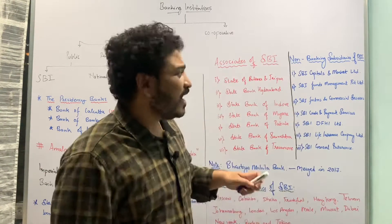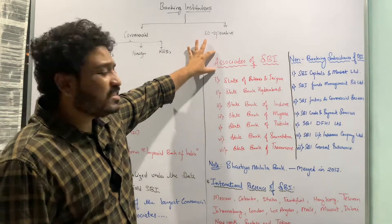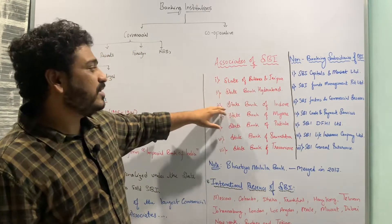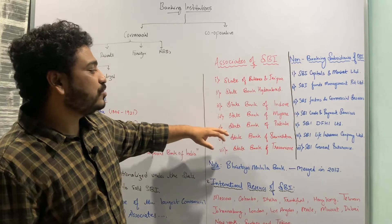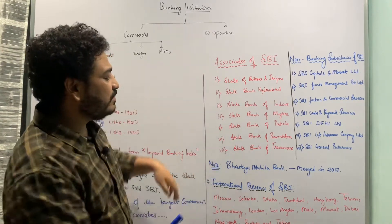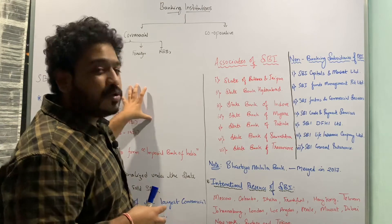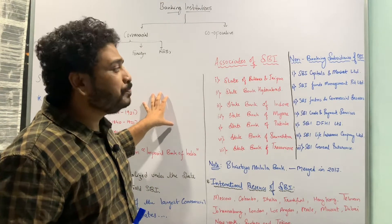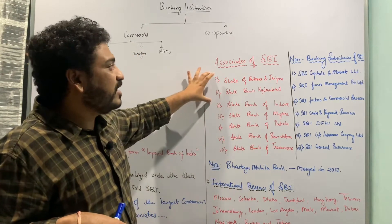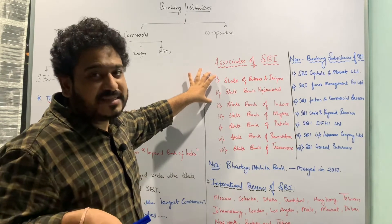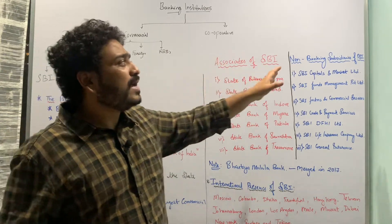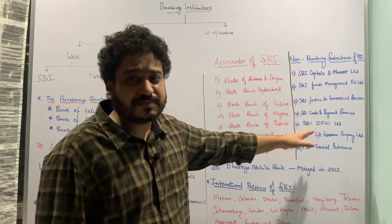The associate banks of the State Bank of India are: the State Bank of Bikaner and Jaipur, the State Bank of Hyderabad, the State Bank of Indore, the State Bank of Mysore, the State Bank of Patiala, the State Bank of Saurashtra, and the State Bank of Travancore. These seven banks are linked with the parent organization — the State Bank of India — and together form the major consortium of the commercial banking sector in India.